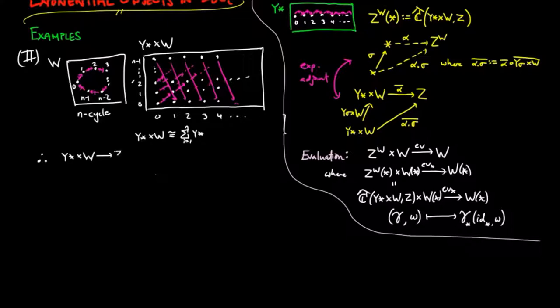Therefore, a morphism from the product to an E set Z is equivalent to giving n elements in Z by seeing where the first column of figures in the product is taken to. The sigma action is by precomposition by the product of Y sigma and the identity of W.